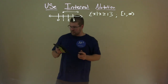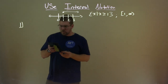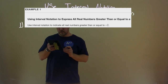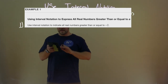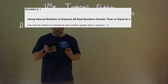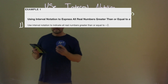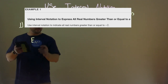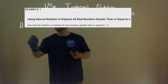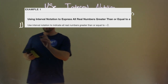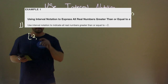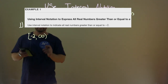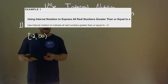Let's go with our first example. They tell us to use interval notation to indicate all real numbers greater than or equal to negative 2. So we're looking at greater than or equal to negative 2. To write that, since it includes negative 2 we use a bracket, and then since it can be any number past that, we want positive infinity with a parenthesis. So the answer is: bracket negative 2 comma positive infinity parenthesis. Fairly simple, not too bad.